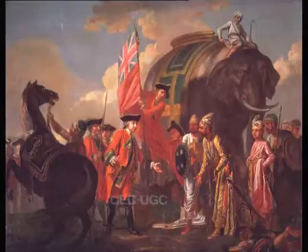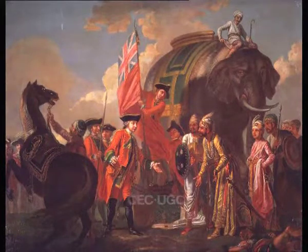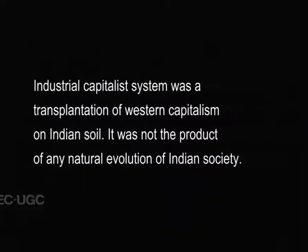That brings us to the modern period. Modern India is very much identified with the advent of colonial rule — British colonial rule, as that was the dominant power. The capitalist system, or the system of industrial capitalism which developed in India, was in fact a transplantation of the Western capitalist system onto Indian soil. So capitalism in India was not the product of the normal evolution of Indian society — it was an exportation from outside. That is one fundamental difference.